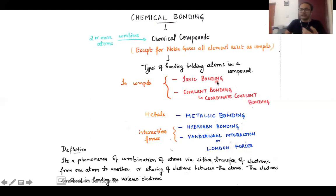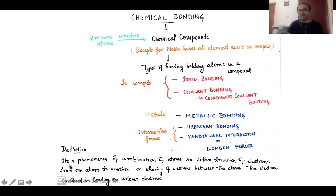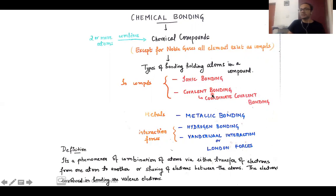In the next video I'll talk about ionic bonding, but before closing let us define what chemical bonding means. Chemical bonding is a phenomenon where atoms combine to form compounds, either by complete transfer of electrons from one atom to another or by sharing of electrons between atoms. The electrons involved in this transfer or sharing are the valence electrons.